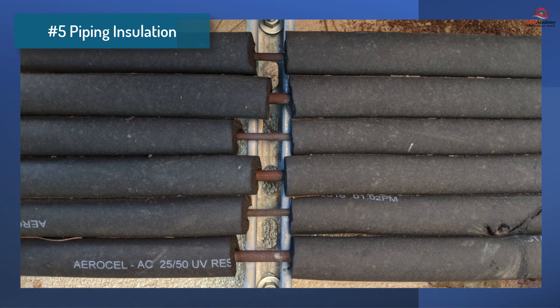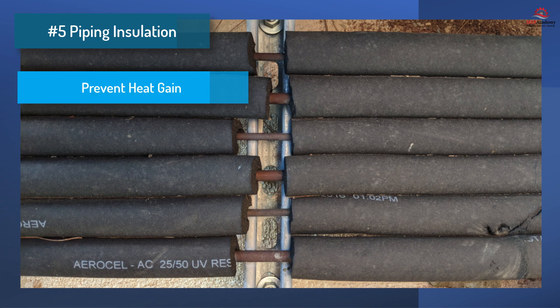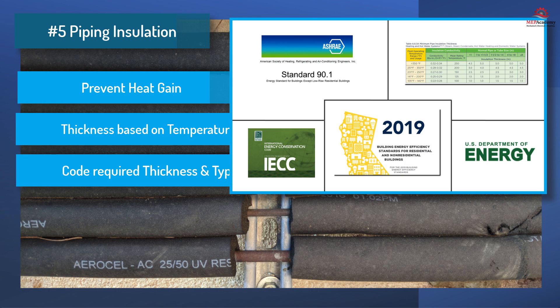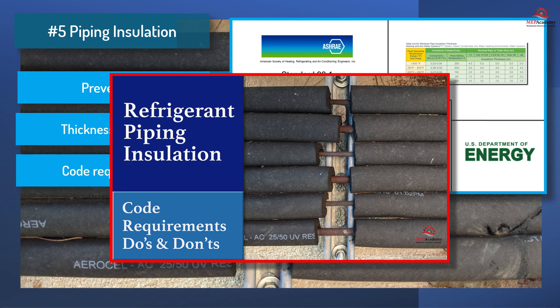5. Refrigerant piping insulation. Proper insulation is necessary to prevent refrigerant lines from losing their cooling capacity. The thickness of the insulation should be chosen based on the temperature difference between the refrigerant and the surrounding environment. Insulation thickness requirements can be found in the various codes that regulate the installation of refrigerant piping.